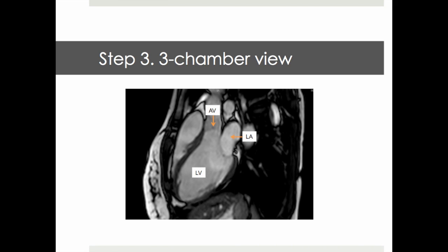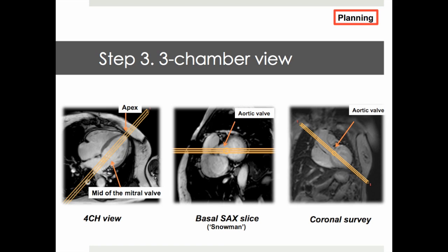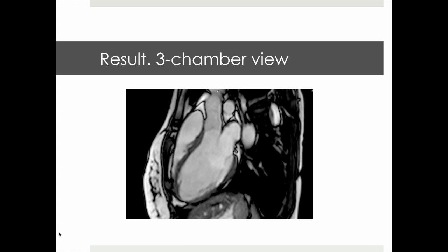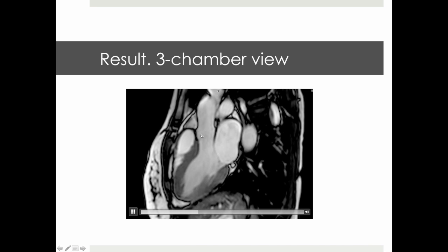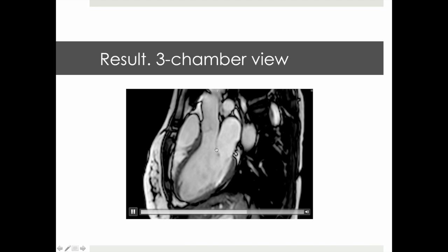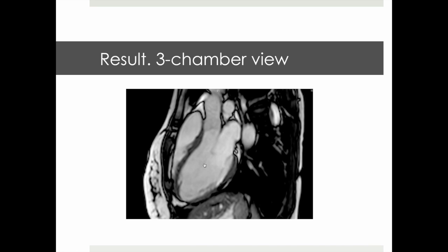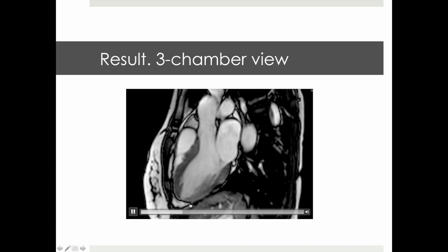Our last planning step is the 3-chamber view, defined by visualization of the left ventricle, left atrium, as well as aortic valve and ascending aorta functioning as the third chamber. For planning, we use the 4-chamber view for definition of the long axis connecting apex and mid of the mitral valve, as well as the snowman view — this time trying to cut right through the middle of the aortic valve. The resulting 3-chamber view allows visualization of the aortic valve, ascending aorta, LVOT, mitral valve, left atrium, left ventricle, and assessment of regional wall motion abnormalities in the anterior septum as well as inferolateral wall.